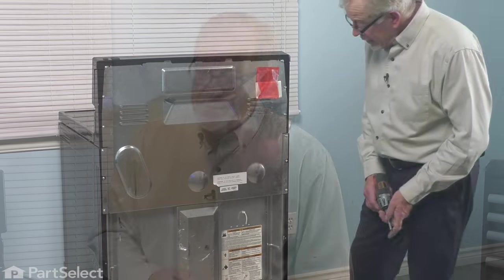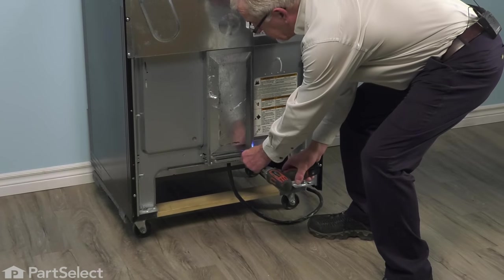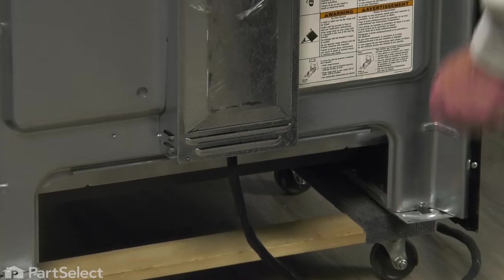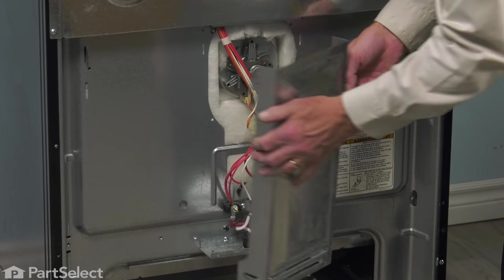We're also going to need to pull that range out far enough that we can remove the access panel at the back as well. With access to the rear of the range, we're simply going to remove these two screws at the bottom of this lower access panel. We'll just press down slightly on it and pull it away.